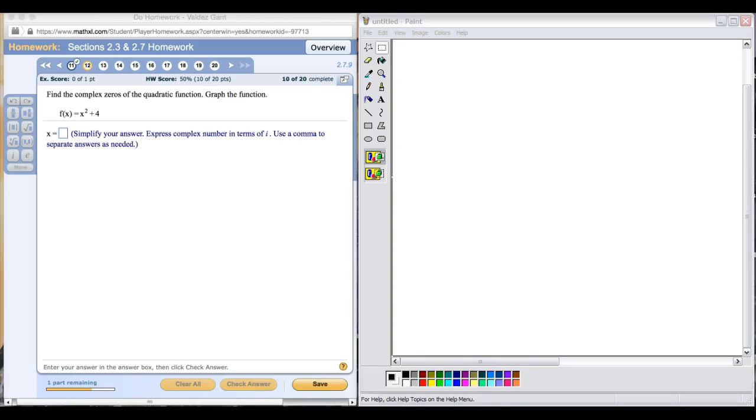In this video, we will deal with solving quadratic equations that end up having complex conjugate solutions. The first problem I want to do here is number 12, where we're going to use the square root principle. We want to find the complex zeros of this particular function, so we take the function and set it equal to zero.